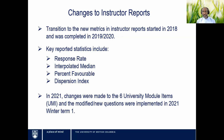The changes started back in 2018. Through a transition phase, we first switched from the standard deviation as a measure of variation to the dispersion index, reporting old metrics alongside new. In the 2019-20 academic year, we switched fully to the new metrics. The key statistics reported include response rate, interpolated median, percent favorable, and dispersion index. There were also some changes introduced in 2021 where the six university module items were updated with new modified questions, but that's beyond the scope of this workshop.